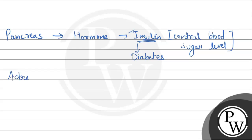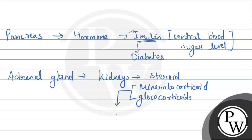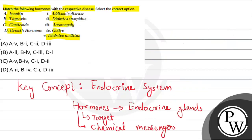There is another gland known as the adrenal gland, present on the surface of the kidneys. The adrenal gland produces hormones known as corticoids, which are steroid hormones of two types: mineralocorticoids and glucocorticoids. If these adrenal hormones are not being made properly in the body, they can cause a disease known as Addison's disease, which is an autoimmune disorder that can harm the adrenal gland itself.